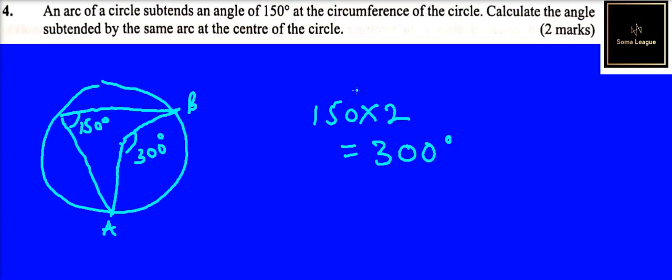So the angle subsided at the center is 300 degrees. A very simple question. You get yourself two marks. So all what you need to know is that if we take, the chord also, the AB can also be called a chord or an arc. It's the same thing.